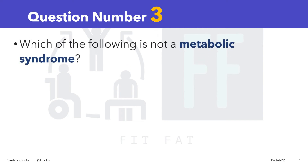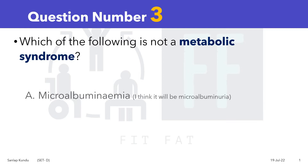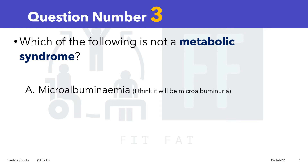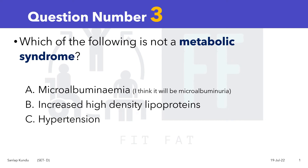Question number three: which of the following is NOT a metabolic syndrome? Option A is microalbuminuria (written as microalbuminemia in the question paper), option B is increased high density lipoproteins, option C is hypertension, and option D is obesity.